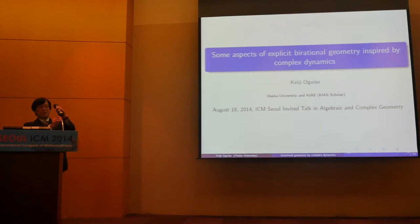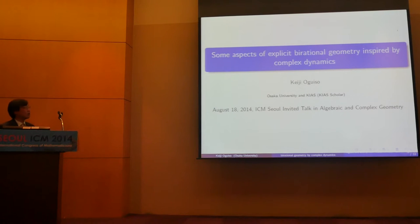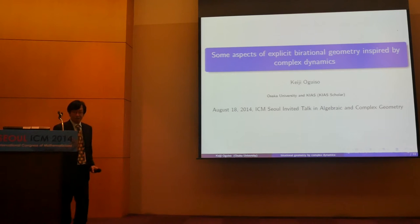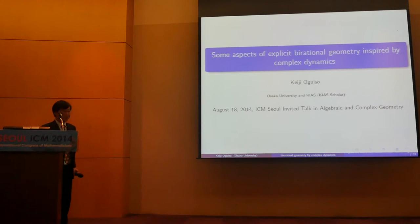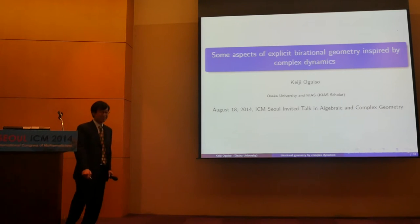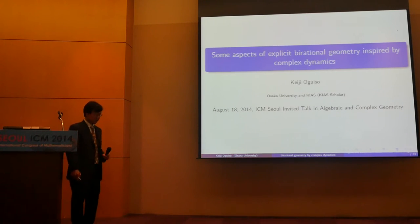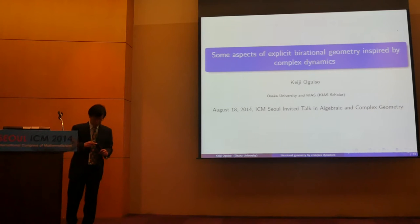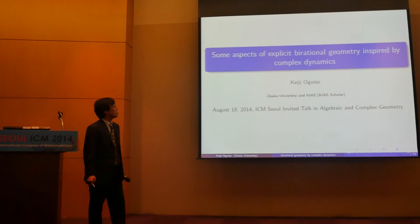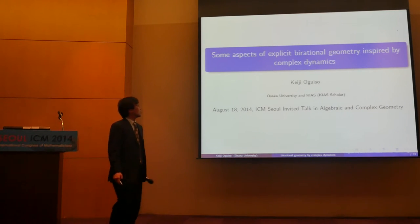Ogiso is a Kiassu scholar at Osaka University. I've known Ogiso for about 25 years, since he was a graduate student with Kawamata. His title is, as you can see, Bi-Rational Geometry from Complex Dynamics.